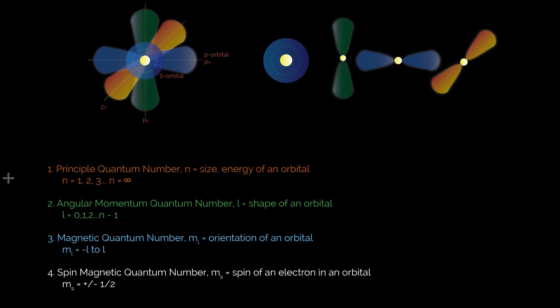So the first quantum number is the principal quantum number, it's what we've been talking about already, which is n, and that is just the size or the energy of an orbital. And once again, n can be any whole number integer up through infinity.